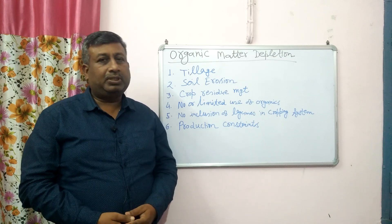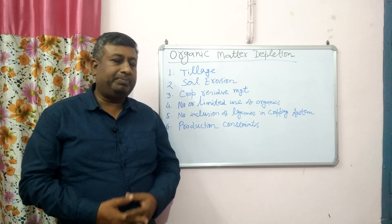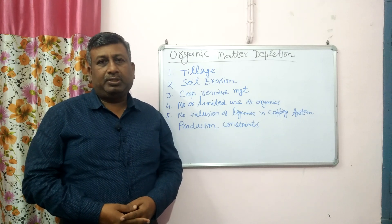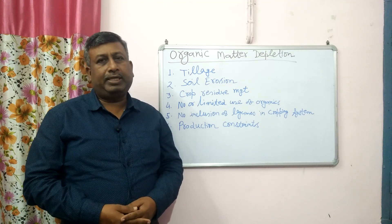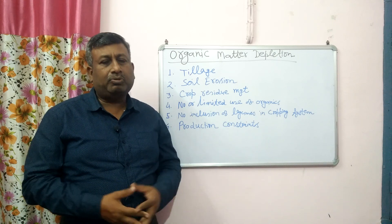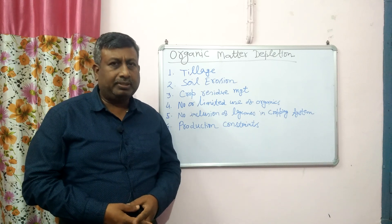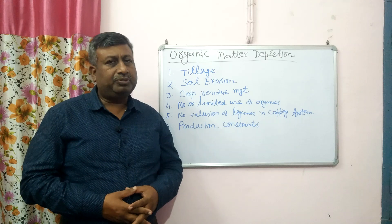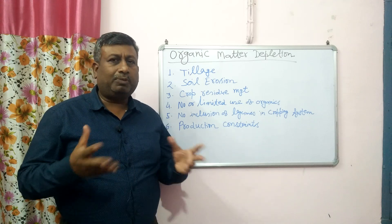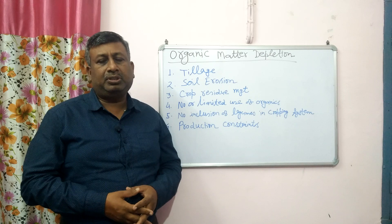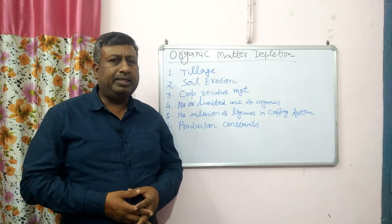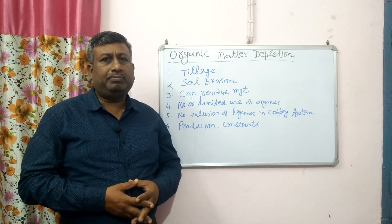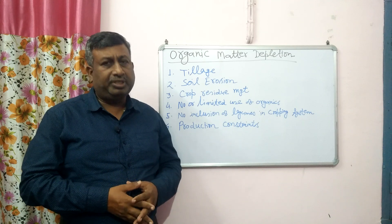What are the processes which are responsible for organic matter depletion? As we know, organic matter is a very important factor for soil fertility, and without organic matter there is no fertility and we cannot get optimum or maximum crop production. So the presence of organic matter is important, and there are different ways for incorporation of organic matter, but we also adopt some practices which are responsible for reduction, or decline, in organic matter. What are these processes or cultivation methods responsible for this reduction?